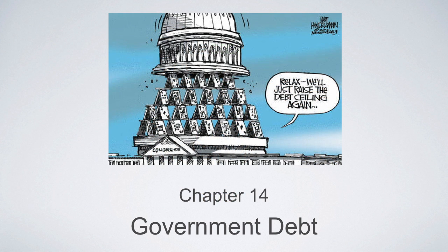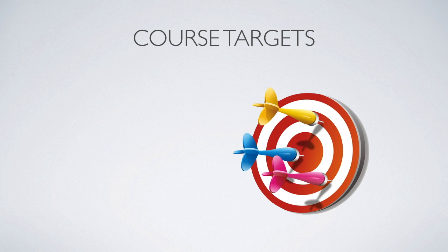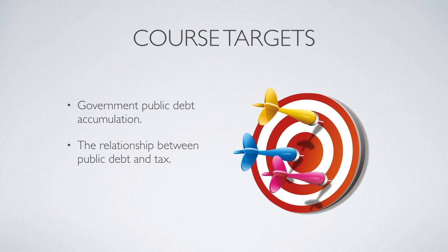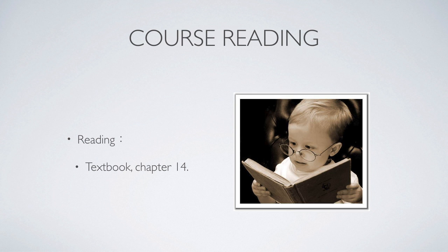Hello everyone, today we are going to learn another new topic which is government debt. For this chapter we have several course targets. The first one is we are going to understand how government accumulates its public debt, then we are going to learn the relationship between public debt and tax, and we finish with Ricardian equivalence theory. To understand the material you can read textbook chapter 14.